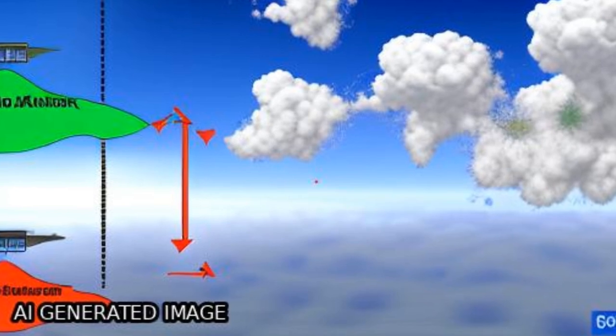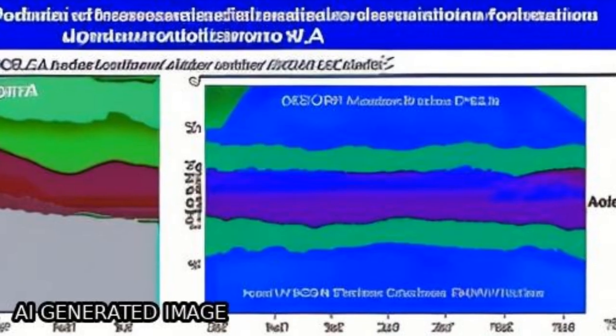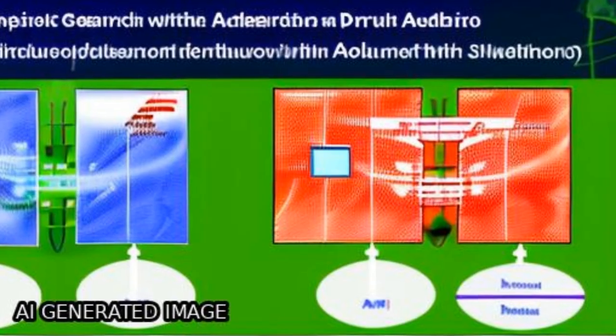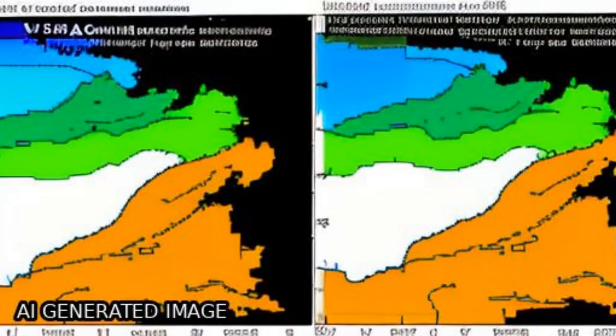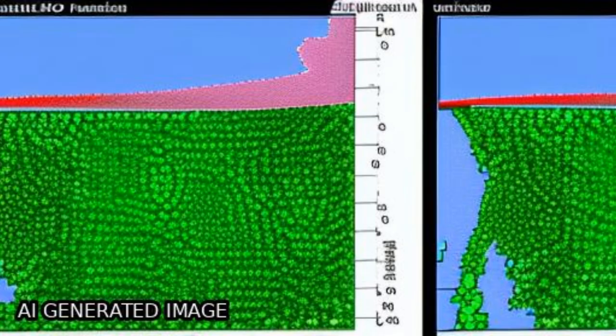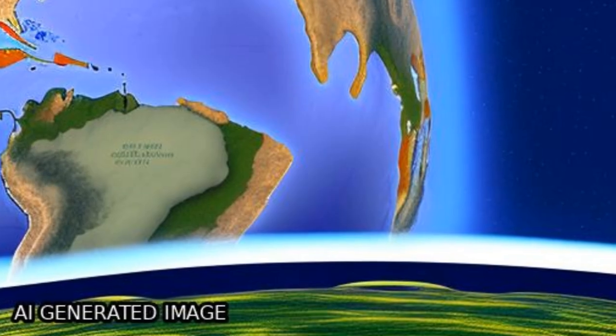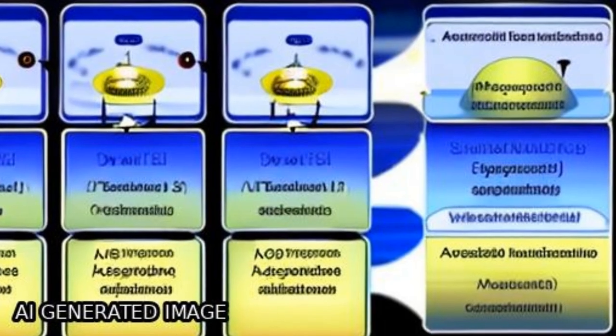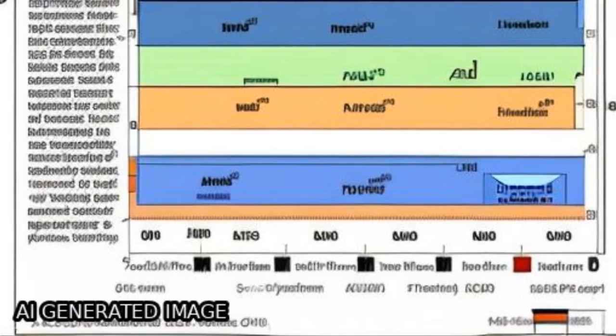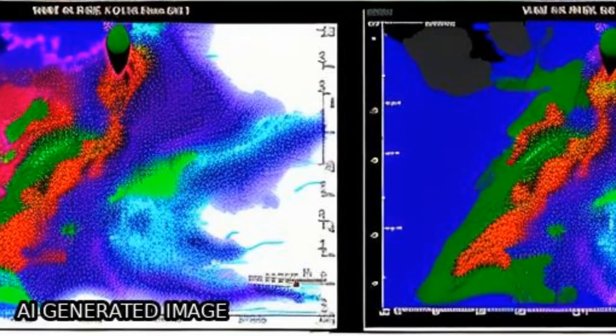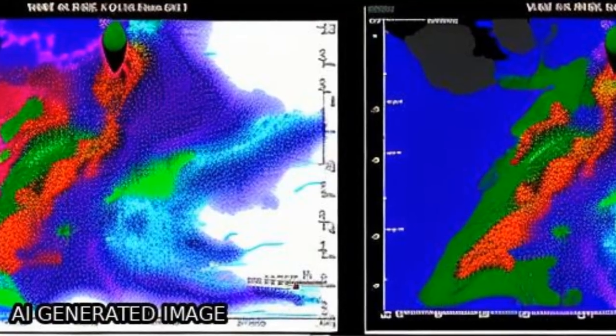Observing system experiments (OSEs) are conducted to examine the changes in quality of assimilation and forecast skills sensitive to the assimilated observational input data.